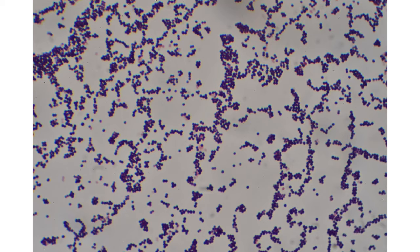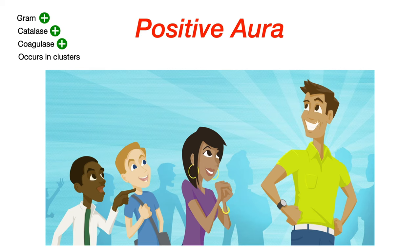I have a really awesome mnemonic to help you memorize the defining characteristics. When you think of Staph aureus, think of 'aura' — aureus equals aura. Somebody who's really positive gives off a positive aura. This guy on the right-hand side of the slide has a positive aura, with that light shining from him and everybody drawn to him because he's so positive.